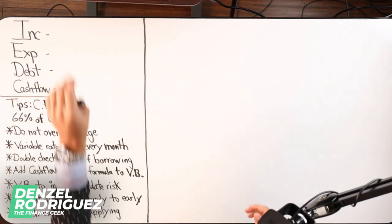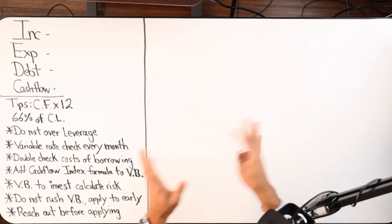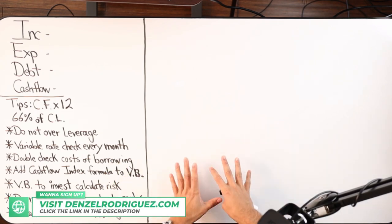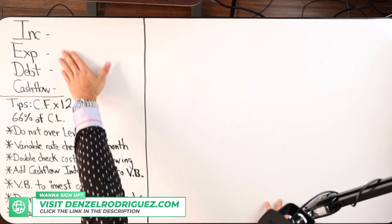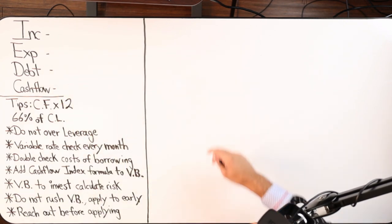First and foremost, as you know, you've got to know your four major numbers before you do any velocity banking, before you do any concept or strategy as it relates to debt elimination or investing. You need to know these numbers: what's coming in, what's coming out, total debt, and that net monthly cash flow.